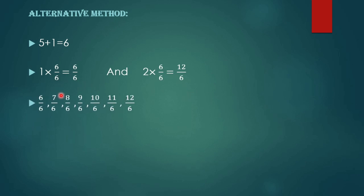The rational numbers that lie between 6/6 and 12/6 are: 7/6, 8/6, 9/6, 10/6, and 11/6.